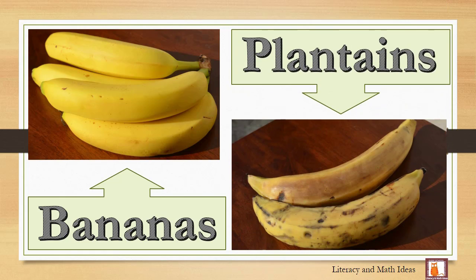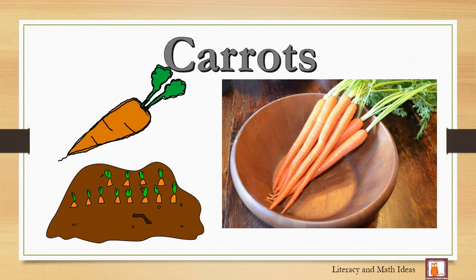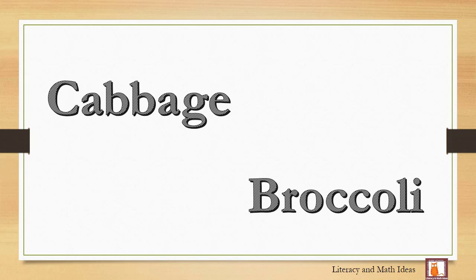The bananas that we eat today were bred to be eaten directly after picking and do not require cooking. The seeds are much smaller. Carrots, cabbage, and broccoli owe their common forms to domestication as well.